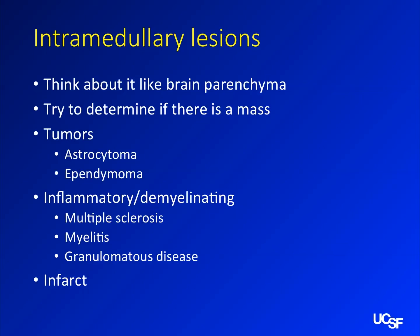Intramedullary — think of it like the brain parenchyma. Anything you can get in the brain parenchyma, you can get in the spinal cord. Tumors, inflammatory demyelinating processes, and infarcts are going to be the most common things. Things less common in the brain, like vascular malformations and cavernomas, you can get them as well. Try to identify if there's mass effect. If there's expansion and an enhancing mass, lean towards tumors. If it looks like primarily a signal abnormality without much expansion, think about an inflammatory process like MS or granulomatous disease. That said, it can be very difficult to tell — you can see bad MS with a lot of mass effect.